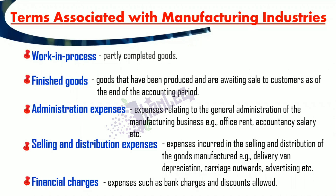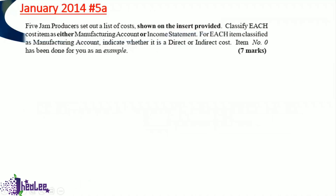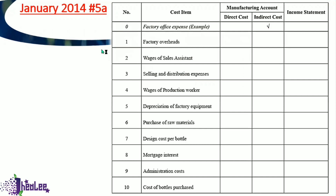Let's apply the concepts learned in this lesson to a question taken from January 2014, number 5A. Five jam producers set out a list of costs. You are to classify each cost item as either manufacturing account or income statement. For each item classified as manufacturing account, indicate whether it is a direct or indirect cost. Remember, income statement items are admin, selling and distribution, and financial charges, while manufacturing items are direct costs or factory overheads.